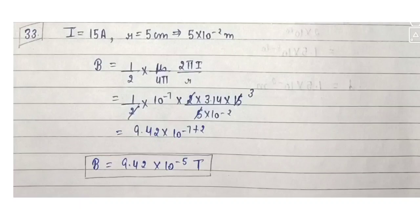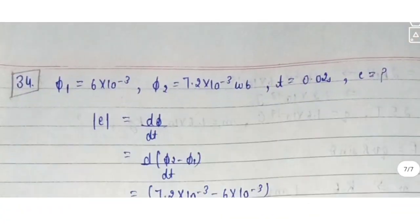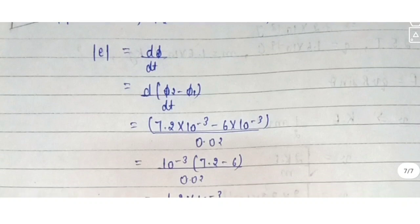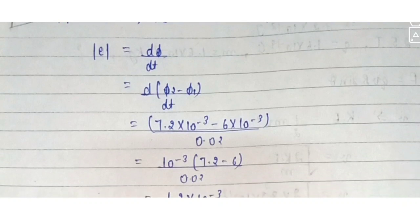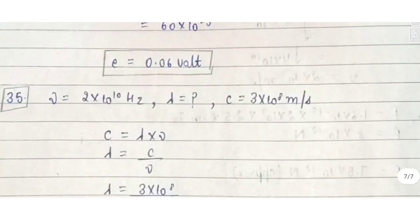Question 33: magnetic flux through a coil changes from 6 × 10⁻³ Wb to 7.2 × 10⁻³ Wb. Calculate the magnitude of the induced EMF. Use e = −dΦ/dt. Just put in the values and solve to get the answer.